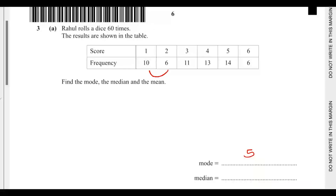Adding the frequencies: 10 + 6 = 16, then 16 + 11 = 27, then 27 + 13 = 40. So the 30th value falls within the group where the running total reaches 40 — that means the median is 4.